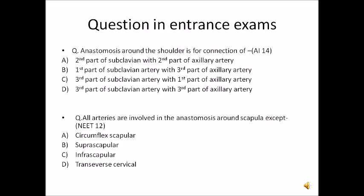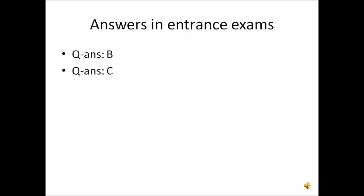The second question was asked in a data exam: 'All arteries are involved in the anastomosis around the scapula except...' The circumflex scapular artery is from the third part of the axillary artery. The suprascapular artery arises from the first part of the subclavian artery. The transverse cervical artery also arises from the first part of the subclavian artery. The intrascapular artery is not present and does not arise from either the subclavian or the axillary artery — so the answer is C, intrascapular artery. If you found this interesting and informative, please like, share, and subscribe. Thank you for watching.